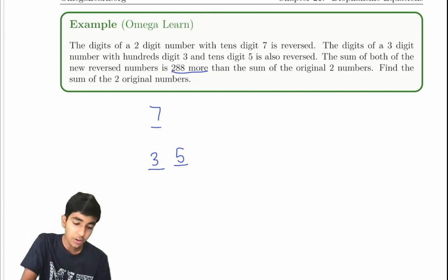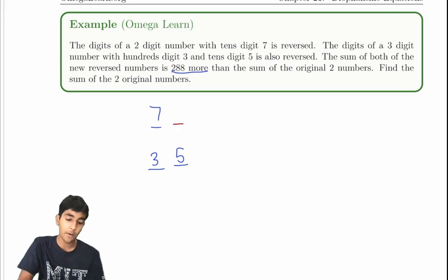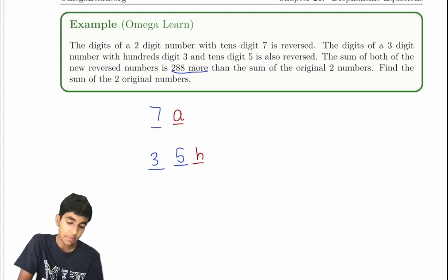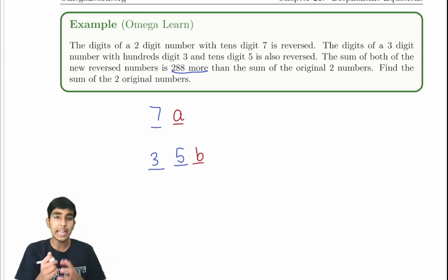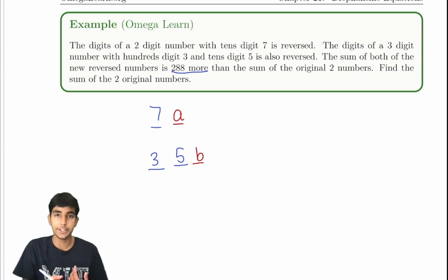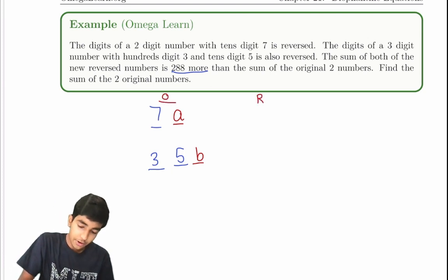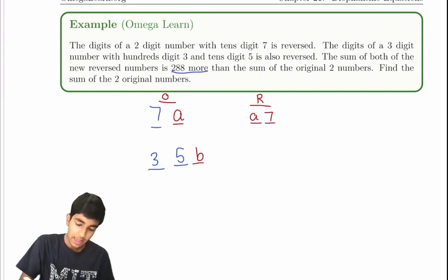We don't know what the units digit of both numbers are, so let's call them A and B. So these are our two numbers: 7A (two-digit) and 35B (three-digit). But those are the original numbers. The reversed numbers are A7 and B53.